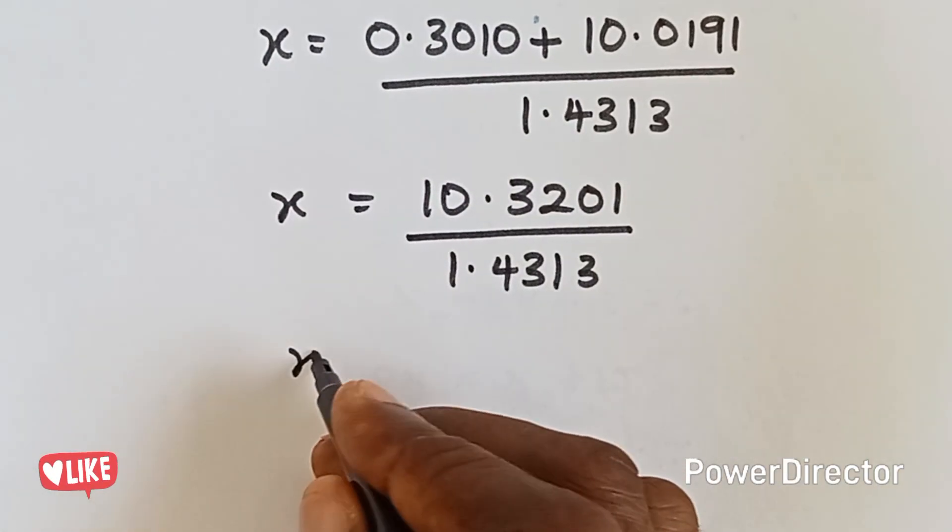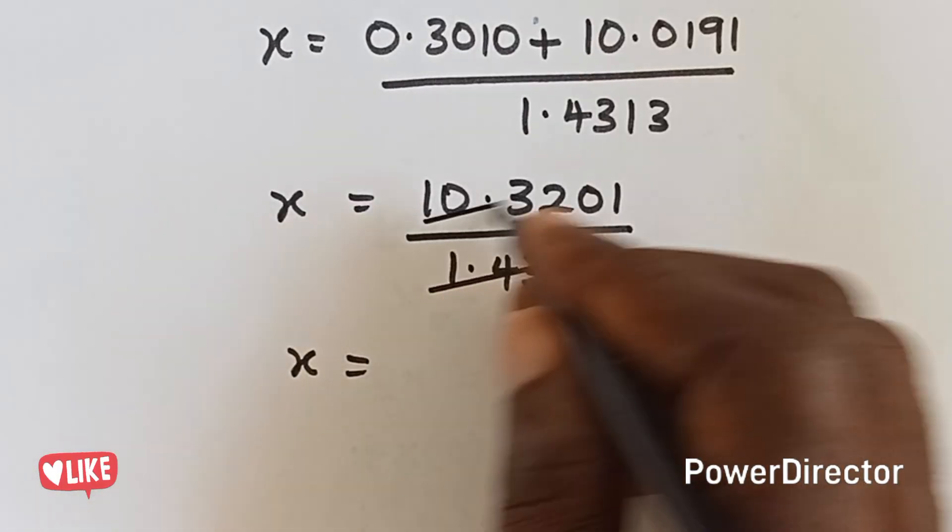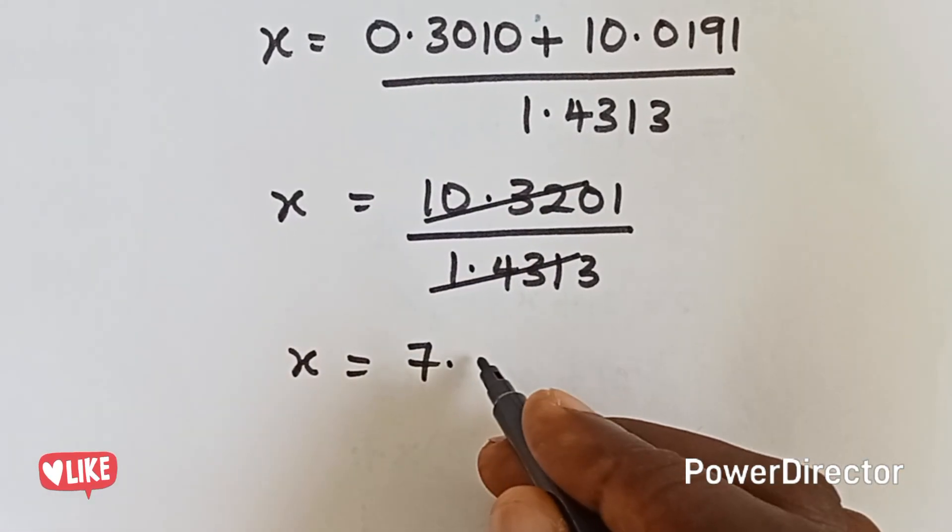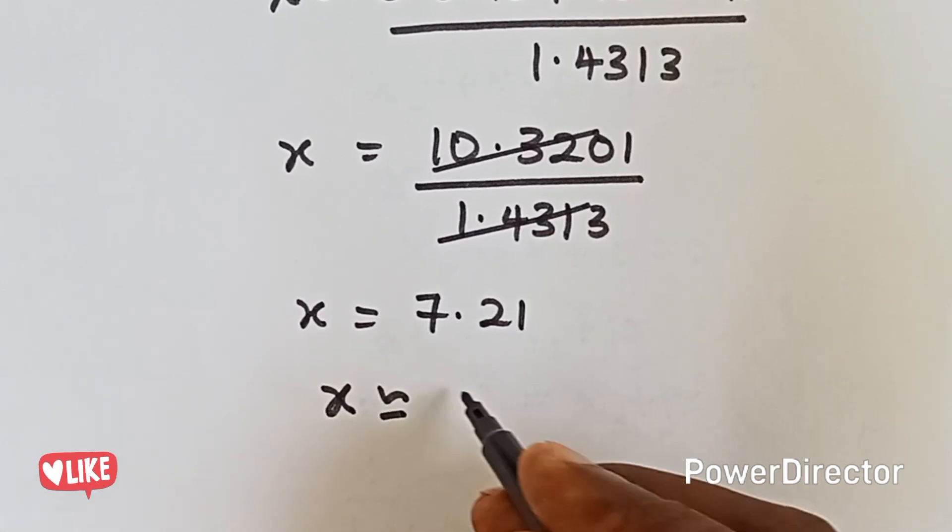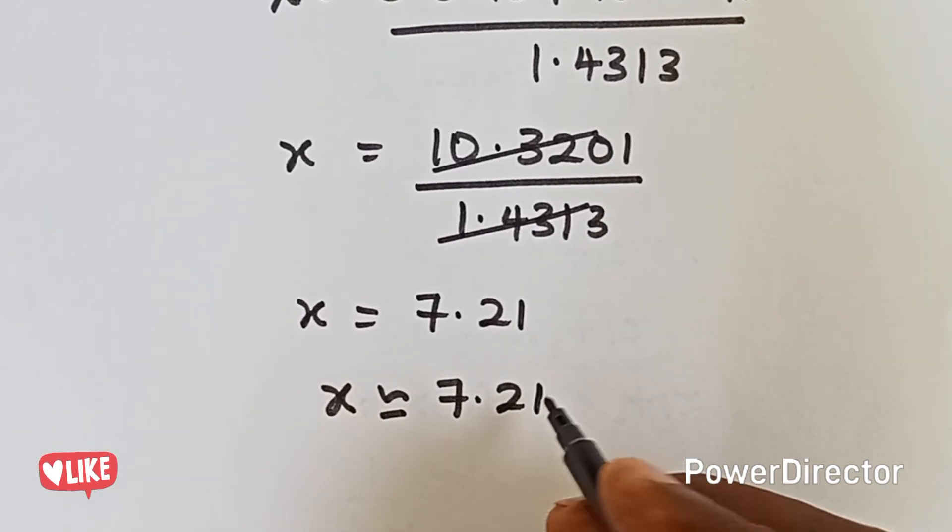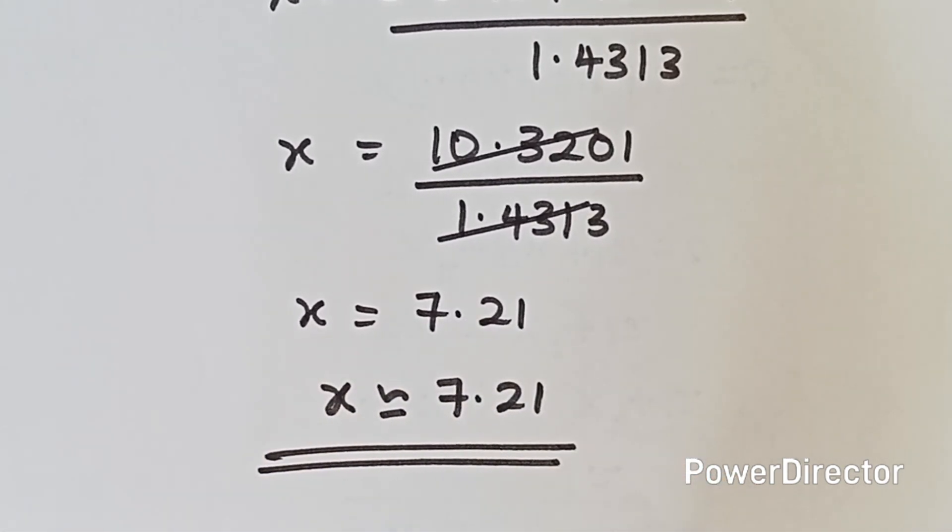Lastly, let's divide that by this. So this by this will give us 7.21. So it means that the value of x is approximately 7.21. And that is our final answer.